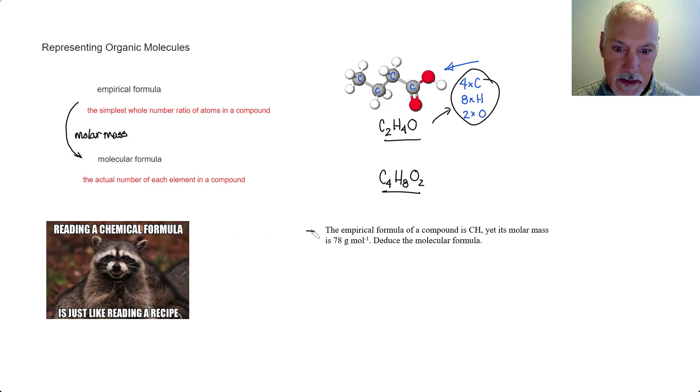I have an example down here how we could use that. So we have an empirical formula of a compound, CH. Its molar mass, however, is 78. So here's how I might set up to solve this problem.